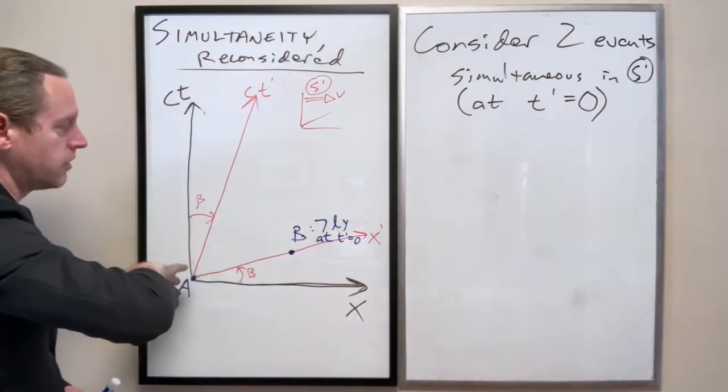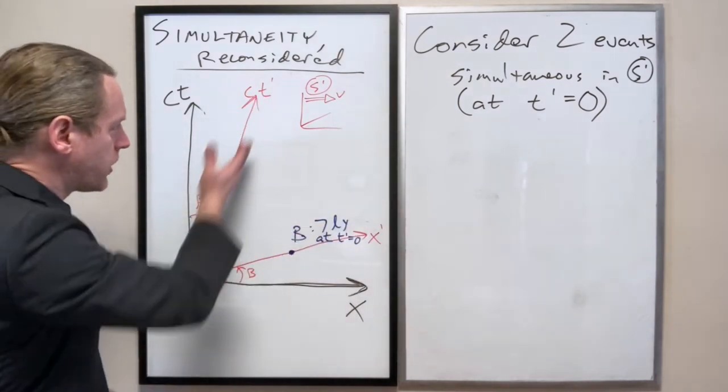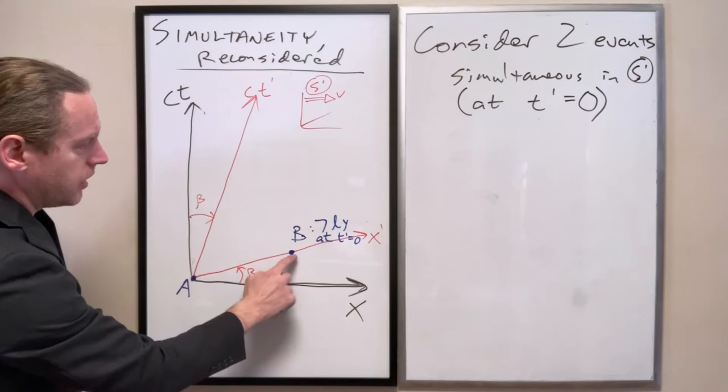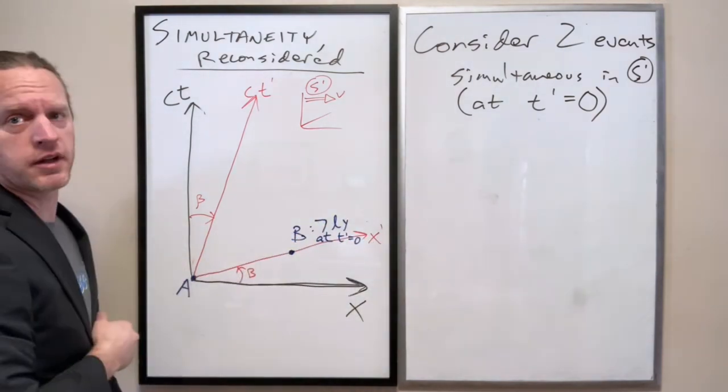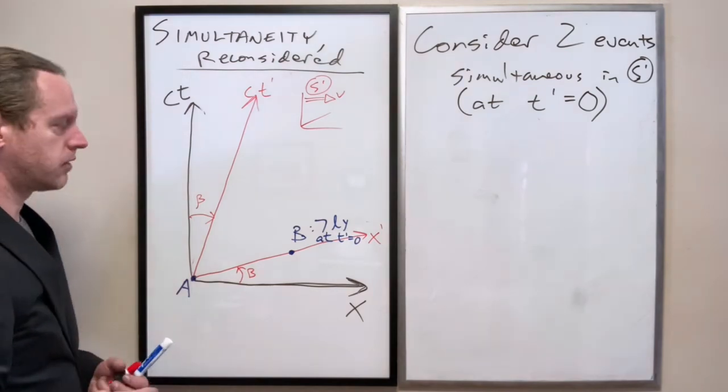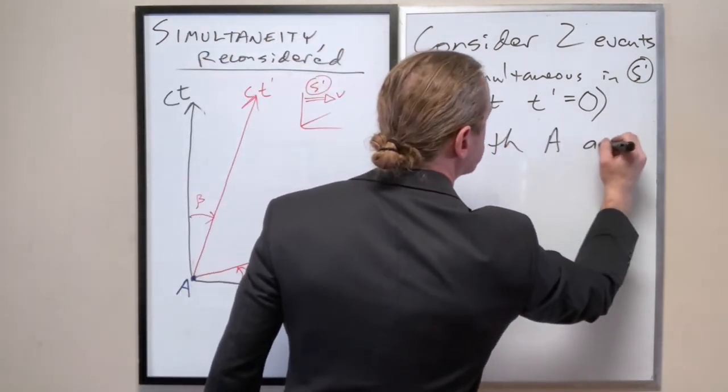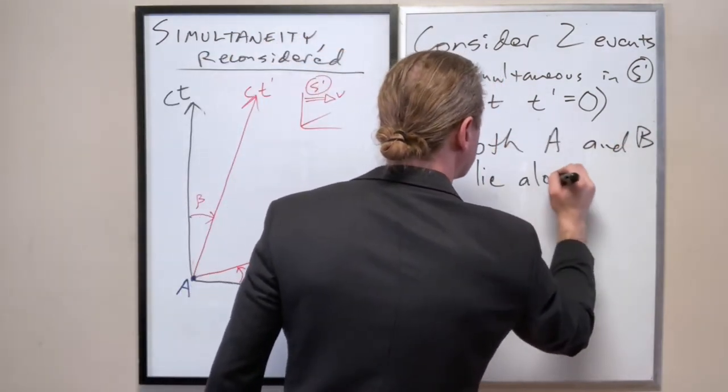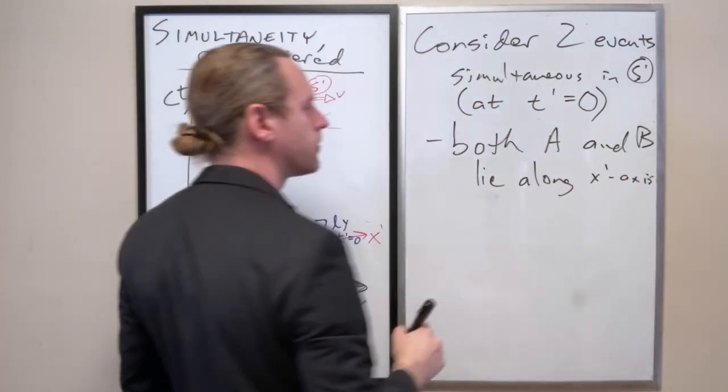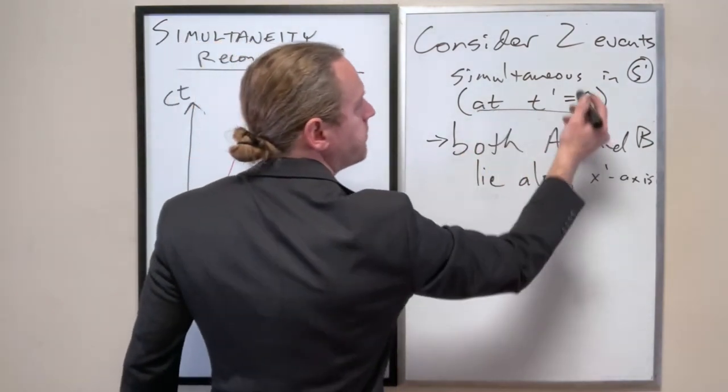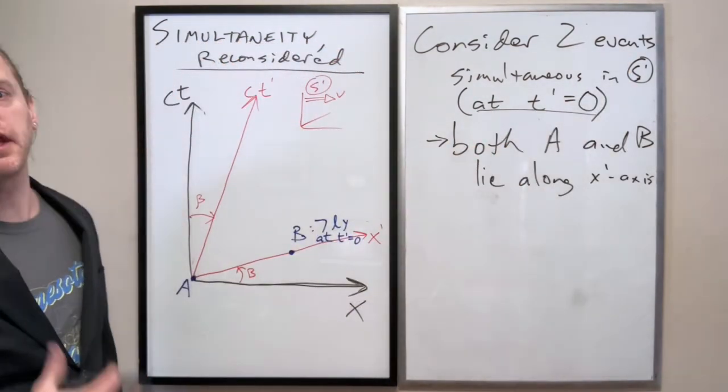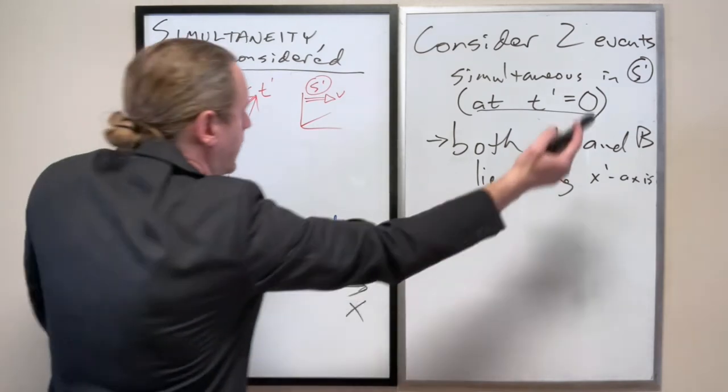So these two events are simultaneous, according to this observer, because they both lie on the space-time diagram where the t prime coordinate is zero. If they both have that value, t prime of zero, they by definition have to lie on the x prime axis.